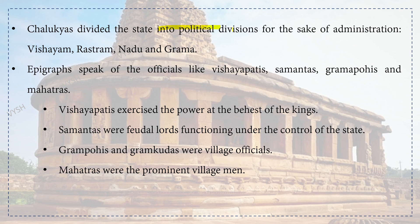The Chalukyas divided the state into political divisions for administrative purposes: Vishayam, Rastram, Nadu and Grama. Epigraphs speak of officials like Vishayapati, Samanta, Gramapohis and Mahatras. Vishayapatis exercised power at the behest of the kings. Samantas were feudal lords functioning under the control of the state. Gramapohis and Gramakudas were village officials, and Mahatras were prominent village men.